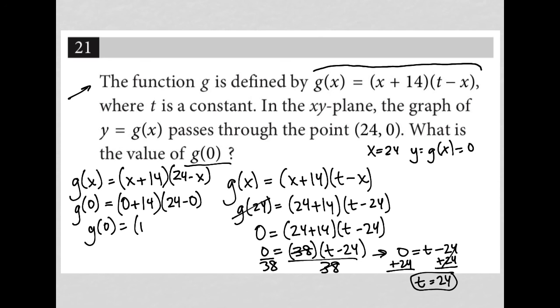So 0 + 14 is 14, 24 - 0 is 24. I'm gonna go to my calculator and see what is 14 times 24, and I get 336. So g(0) = 336. That is our answer.